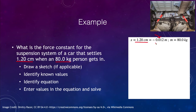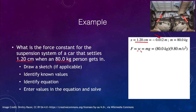The displacement is negative 0.012 meters, and the mass is 80 kilograms — those are our known values. First, we need to figure out the force involved. The force equals the weight, which is mass times the gravitational acceleration. The mass is 80 kilograms and gravitational acceleration is 9.8 meters per second squared, so the force is 784 Newtons.